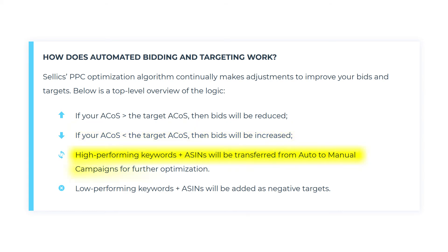Thirdly, high-performing keywords and ASINs are going to be transferred from our auto campaigns to our manual campaigns for further optimization. Smart campaigns will be set up in a way — which we'll run through in this tutorial series — that will continually harvest new keywords from that campaign structure, allowing us to continually find new targets to drive more profitable sales.